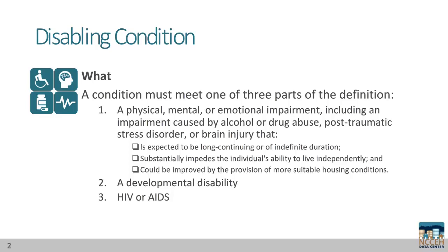As HUD is the Department of Housing and Urban Development, the goal is to record disabilities impacted by or connected to a client's housing situation. There are two other types of disabling conditions that do not need those follow-up questions. Part 2: a developmental disability. Part 3: HIV or AIDS.